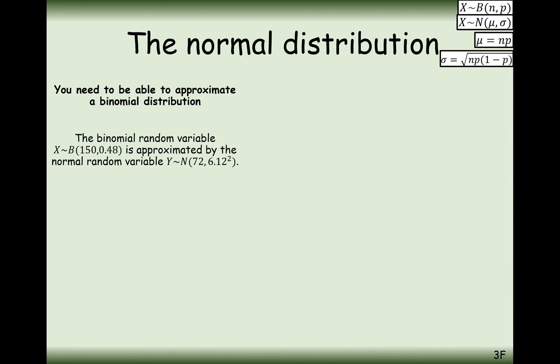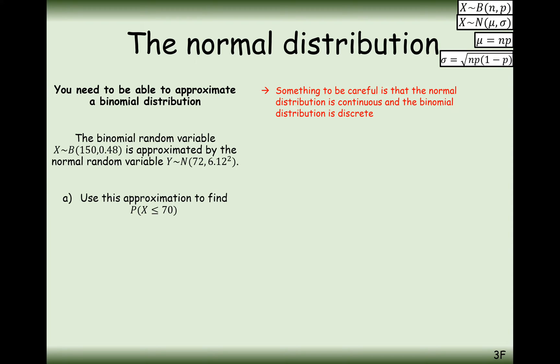Next question: X is binomially distributed with n = 150 and p = 0.48, approximated by a normal distribution with mean 72 and standard deviation 6.12. Part (a): use this approximation to find P(X ≤ 70). We have to be careful when converting 70 — the number of successful trials — into the normal distribution, because we're moving from discrete data to continuous data.